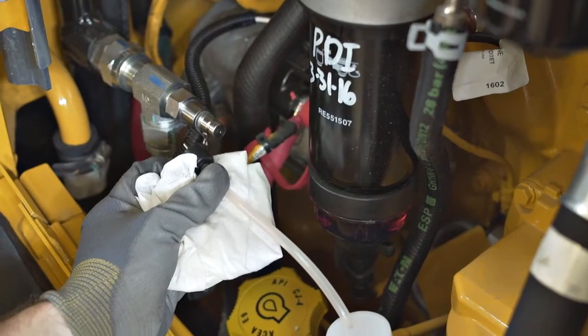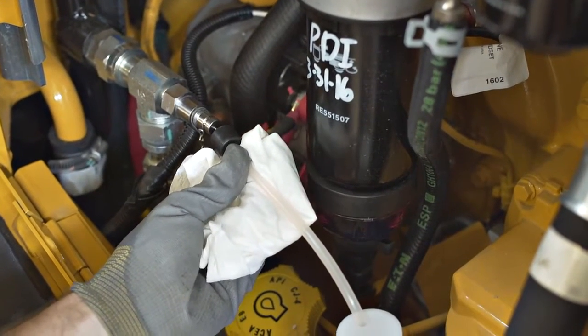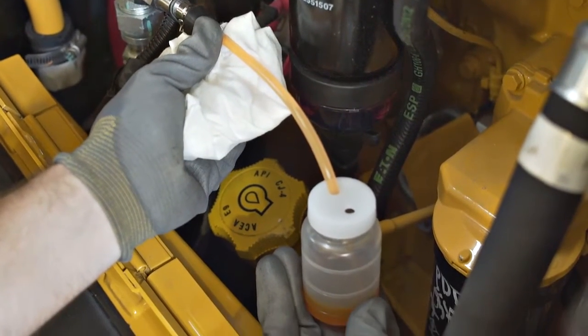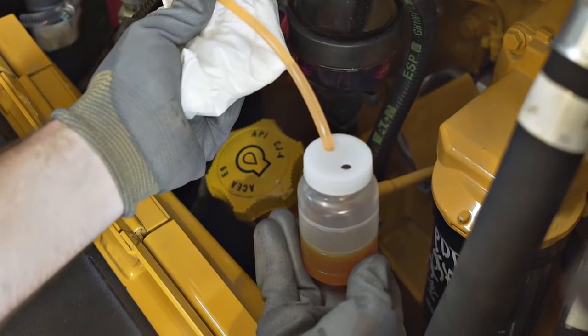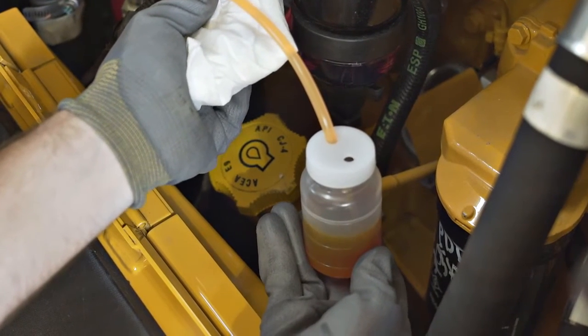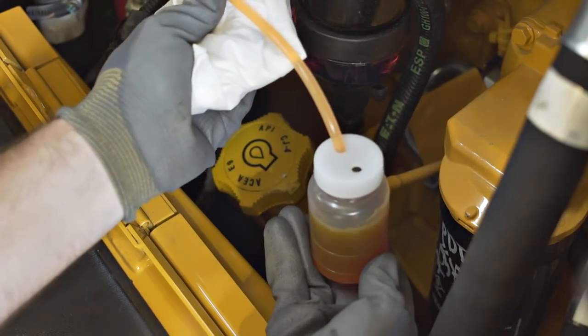To take the sample, press and hold the sample probe to the valve to release oil from the system into the sample bottle. Fill the oil sample bottle approximately 80% to 90% full. Leave some air space between the top of the fluid and the top of the bottle.